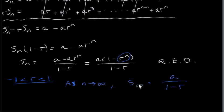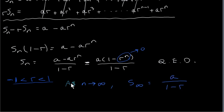So when we're summing an infinite number of terms, we can write S sub infinity. What happens is that the r to the n term goes to 0 as n tends towards infinity, so we're left with A times 1 over (1 minus r). This is the sum to infinity of a geometric series, but this formula only holds as long as r lies between minus 1 and plus 1.